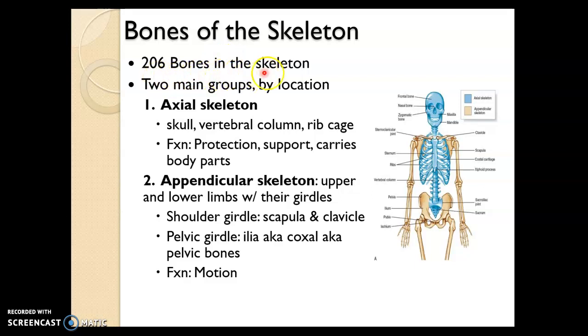There are 206 bones in the skeleton that can be divided into two groups. The axial skeleton, which you can see here in blue, consists of bones from the skull, the spine, and the ribcage.